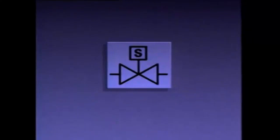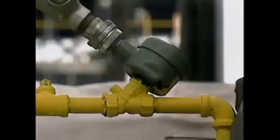Solenoid actuators don't produce a great deal of force when they operate, so when a valve has to be throttled or when more force is needed to position a valve, a different type of actuator is generally used. On a piping system diagram, a solenoid actuator may be represented by a specific symbol.